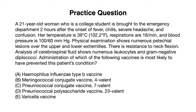Practice question: A 21-year-old woman who is a college student is brought to the emergency department two hours after the onset of fever, chills, severe headache, and confusion. Her temperature is 102.2, respirations are 16, and blood pressure is 100 over 60. Physical exam shows numerous petechial lesions over the upper and lower extremities and resistance to neck flexion. Analysis of her CSF shows numerous leukocytes and gram-negative diplococci. Administration of which vaccine is most likely to have prevented this patient's condition?